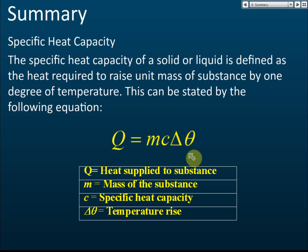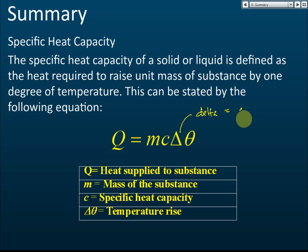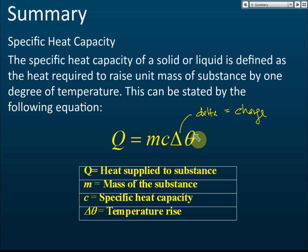The formula is Q = mcΔθ. The triangle symbol is pronounced 'delta' and means 'change', so Δθ means the change of temperature — not the temperature itself. In some books it may be written as mc theta or mc delta theta, but either way it refers to the change in temperature.